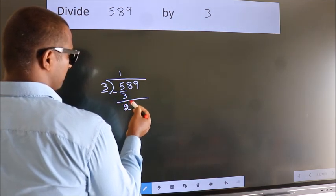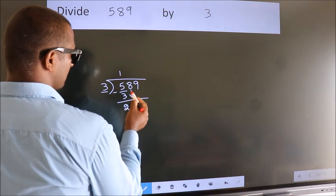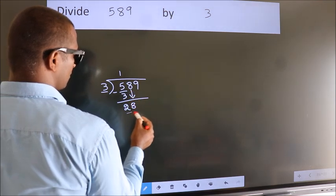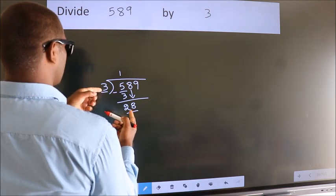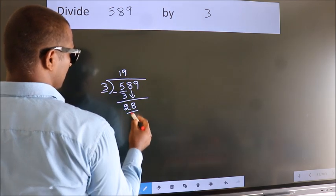After this, bring down the beside number. So, 8 down. So, 28. A number close to 28 in 3 table is 3 nines 27.